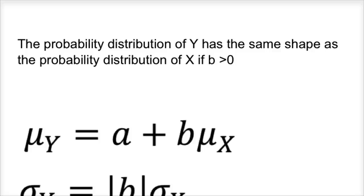The probability distribution of Y has the same shape as the probability distribution of X if b is greater than zero.